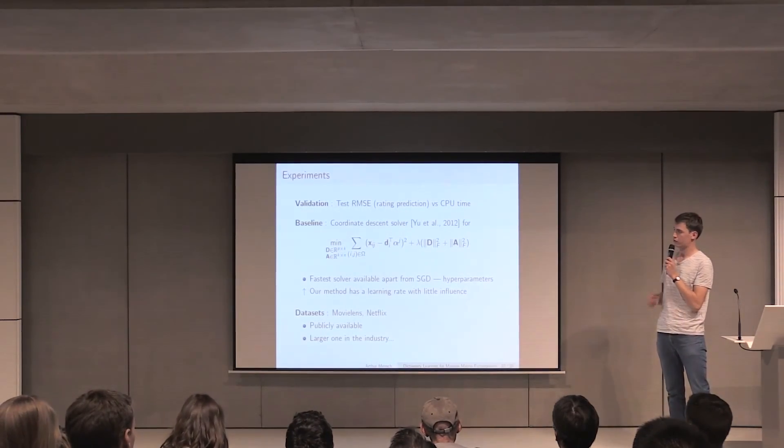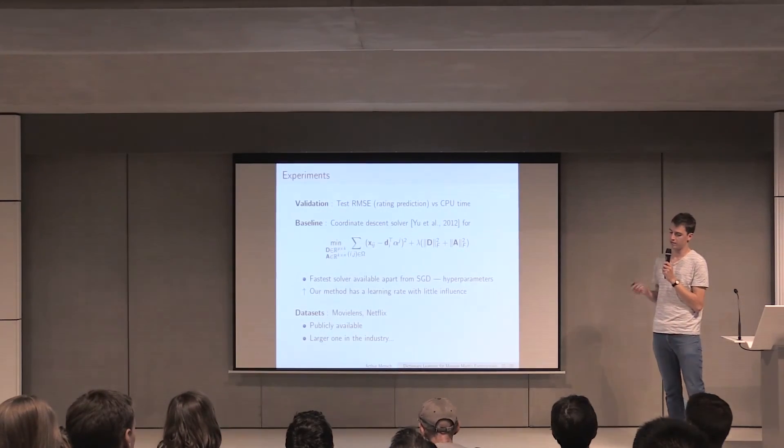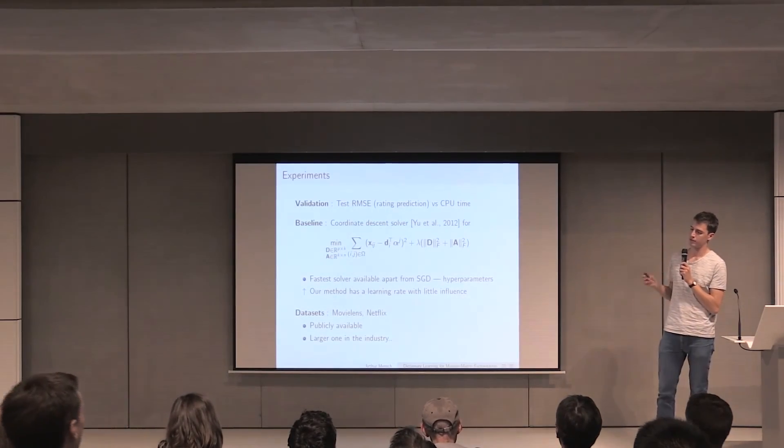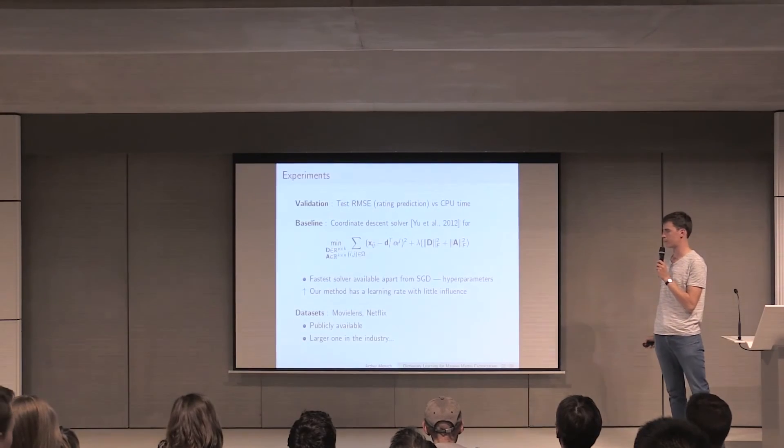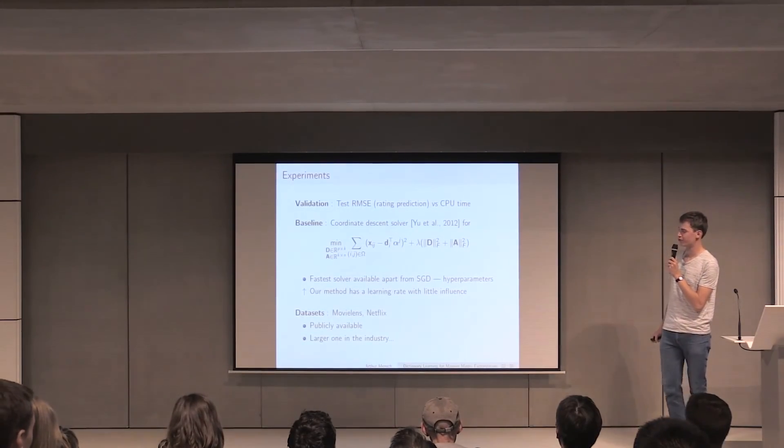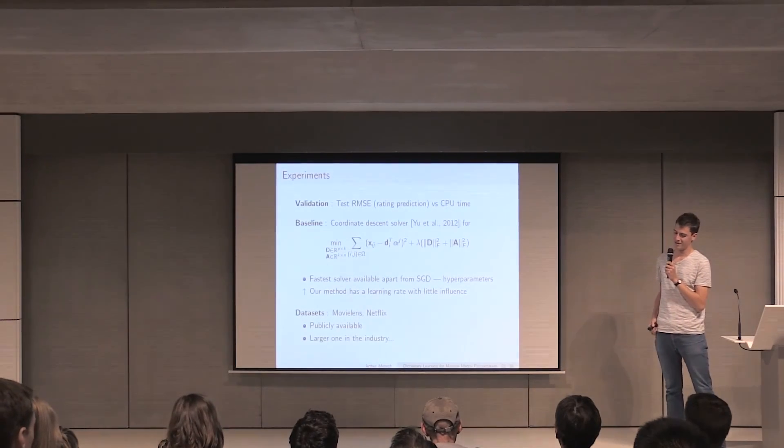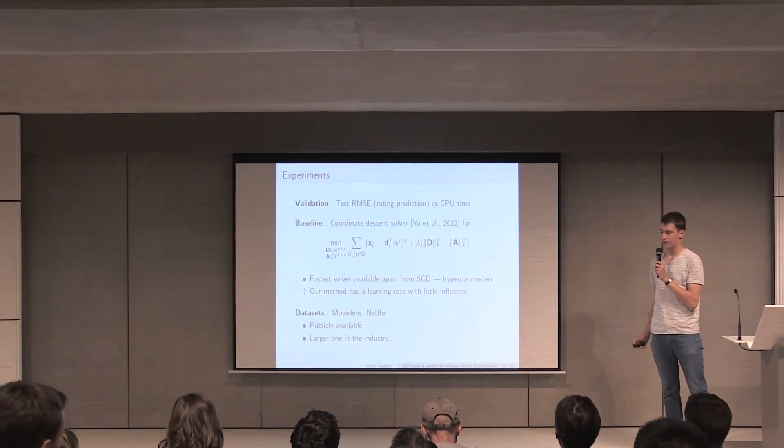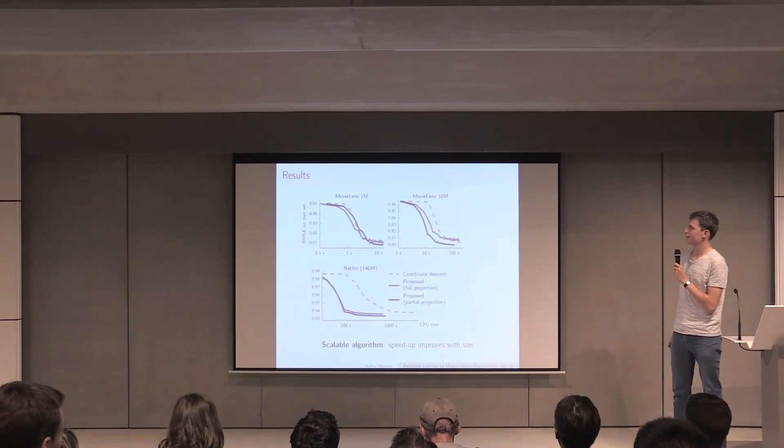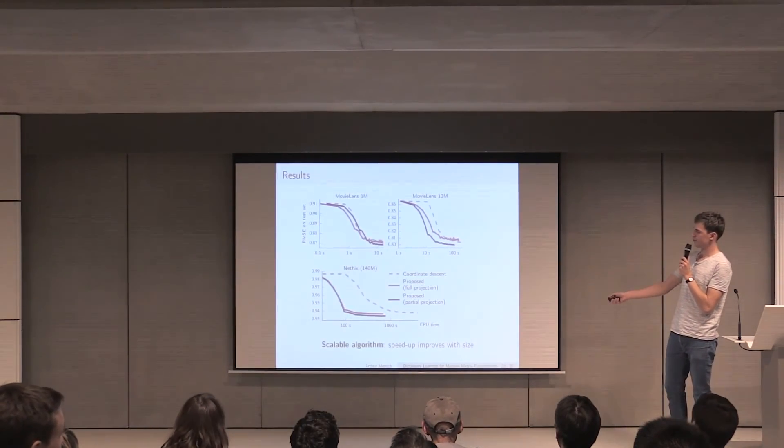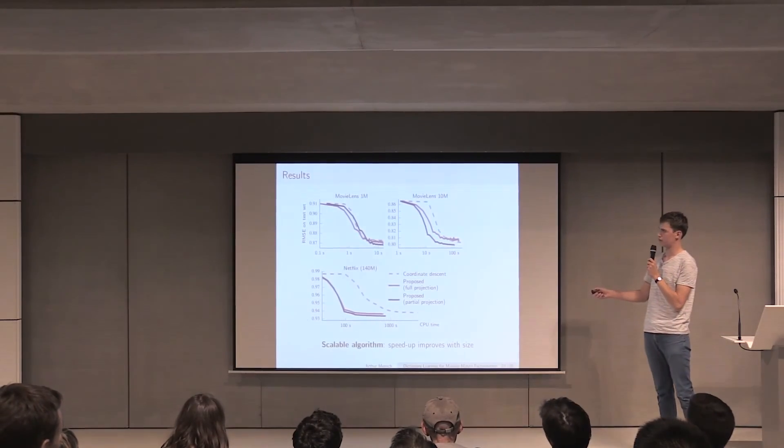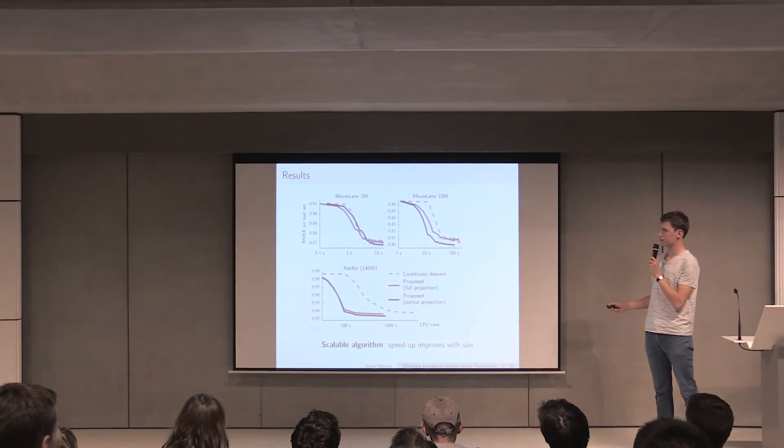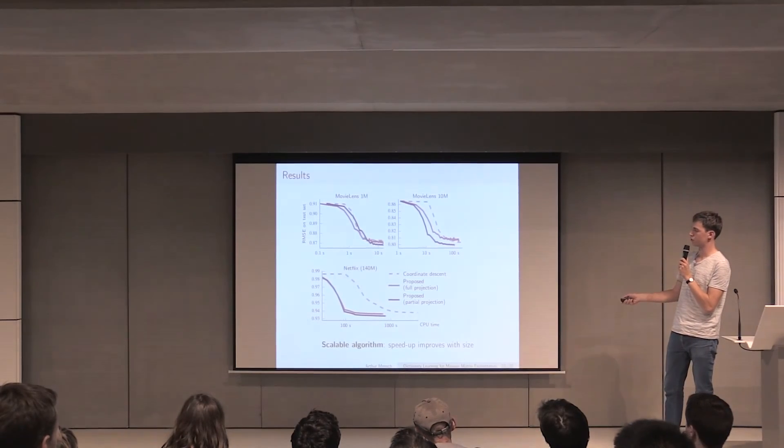The reason why we compare ourselves to the coordinate descent solver is that our method has very little dependency on hyperparameters. So, it seems fair to compare it to something that does not require cross-validation for setting hyperparameters. The datasets we used are, unfortunately, MovieLens and Netflix because, well, they're basically the biggest datasets publicly available, but I'm pretty sure that the industry has larger datasets. We see that our algorithm performs better and better when you increase the number of samples. Against a very little dataset with only one million ratings, we basically perform as well as the coordinate descent solver.